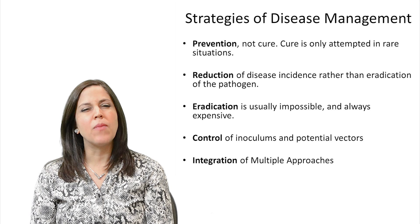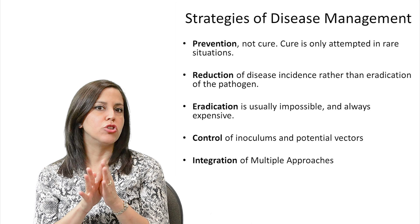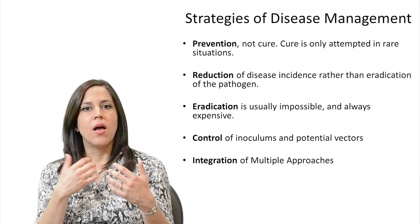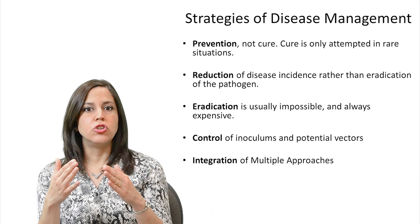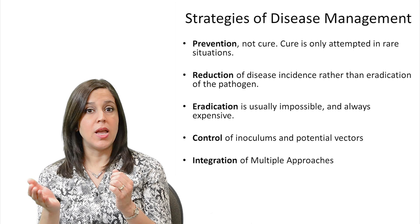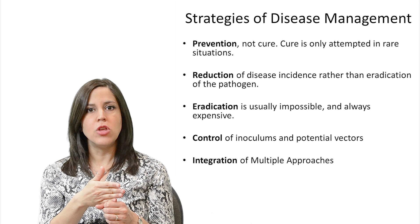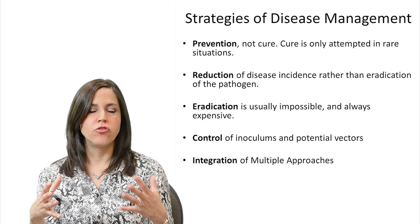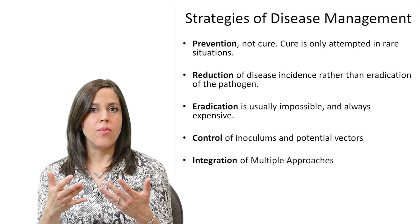For strategies of disease management: prevention is preferred over cure, which is only attempted in rare situations. We want to prevent disease from occurring in the first place. If we get disease, we want to reduce disease incidence — how many plants are infected — rather than try to eradicate the pathogen. Eradication is usually impossible and always expensive, but it is the first step when a new disease enters an area, because the pathogen may not yet be established and you may be able to completely eliminate it.